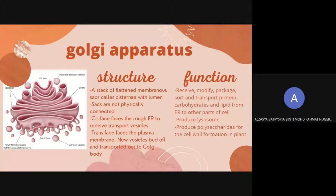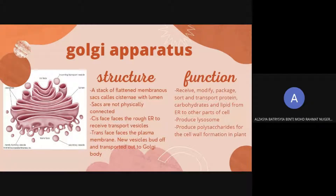Another function of the Golgi apparatus is that it produces lysosomes by addition of hydrolytic enzymes to endosomes from the Golgi apparatus. The Golgi apparatus also produces polysaccharides for cell wall formation in plants.